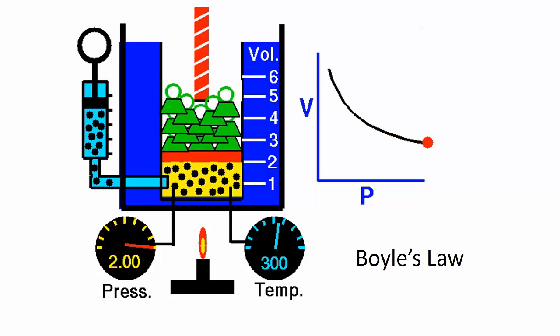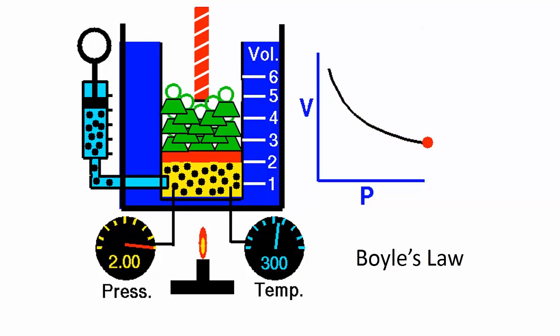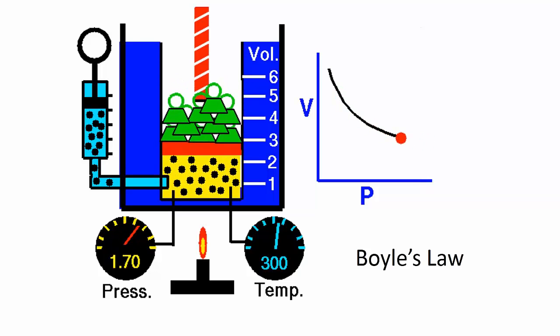Boyle's law states that for a given gas sample at constant temperature, the product of the pressure and the volume yields a constant. The pressure and volume are thus inversely proportional.